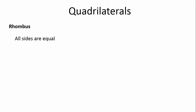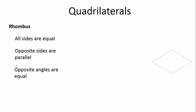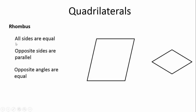A rhombus: all the sides are equal and opposite sides are parallel. This is also a squashed square — a square that's been pushed over to one side. All the sides are equal: that is equal to that, is equal to that, is equal to that. Opposite sides are parallel, just like our square — that is parallel to that, and that is parallel to that. Opposite angles are equal: this angle is equal to this angle, but not equal to this angle, which is equal to this angle.